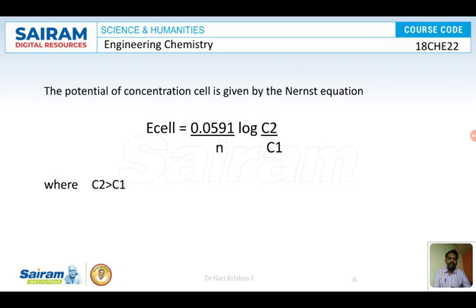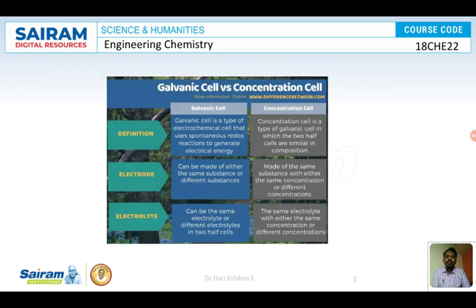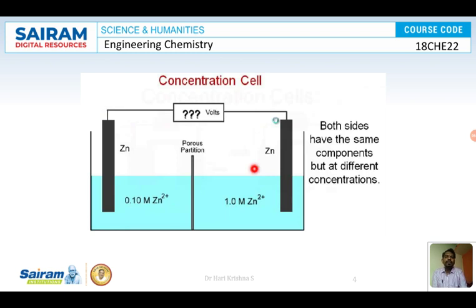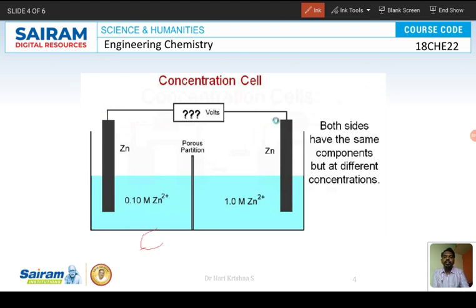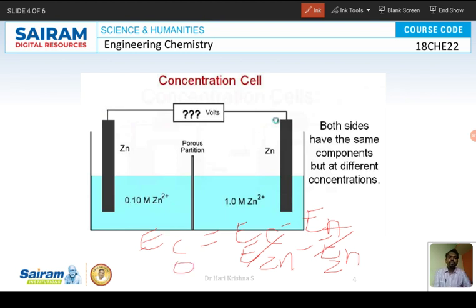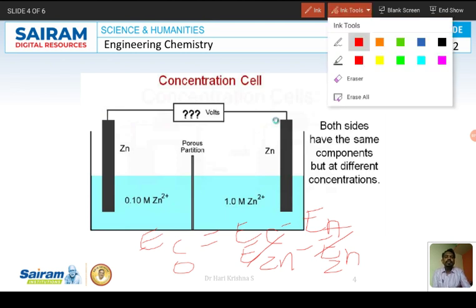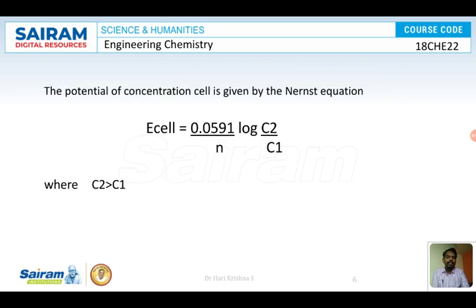For a cell to produce power, c₂ must be greater than c₁. Normally the Nernst equation includes E°, but here there is no E° term. This is because both anode and cathode are made of zinc: E°_cell = E°_cathode − E°_anode = E°_Zn − E°_Zn = 0. Therefore E° for concentration cells is always zero. The final expression is: E_cell = (0.0591 / n) × log(concentration of cathodic species / concentration of anodic species).